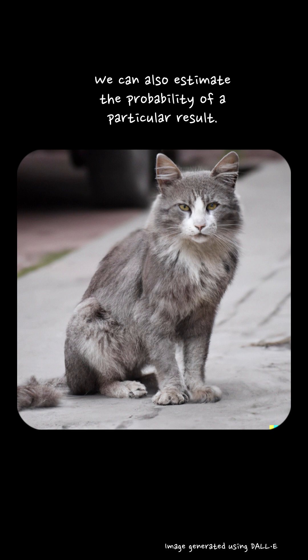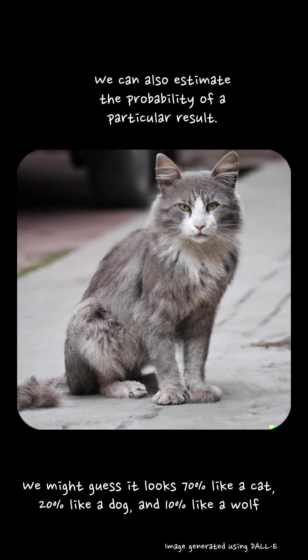Not only can we predict specific outcomes, but we can also estimate the likelihood of each possible result. Suppose you're shown a picture of a cat that resembles a dog and a wolf. You might guess it looks 70% like a cat, 20% like a dog, and 10% like a wolf.